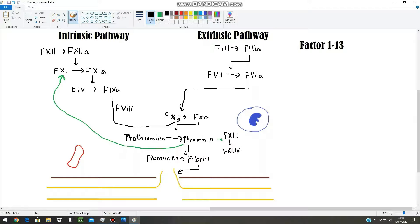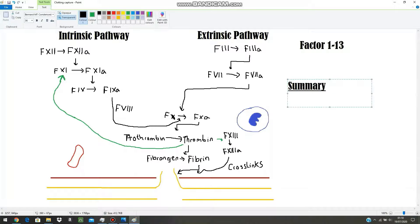Thrombin also helps to convert factor 13 to factor 13a. And this is such an important factor as it helps to form crosslinks within the fibrin sheath formed. And this is what makes that fibrin sheath so strong is because you've got crosslinks.